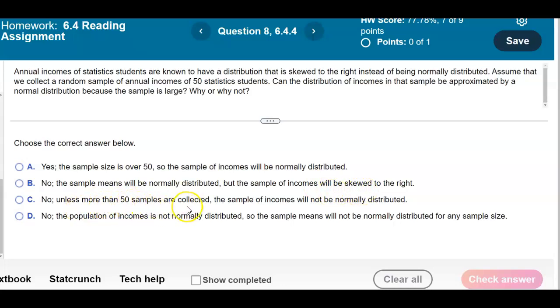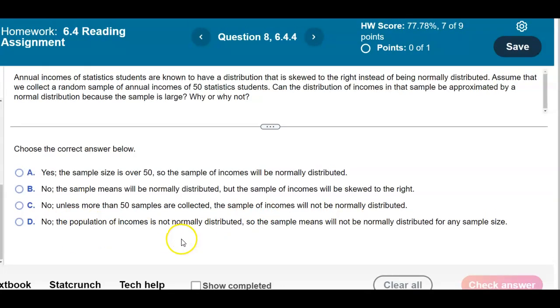No, unless more than 50 samples are collected, the sample of incomes will not be normally distributed. And no, the population of incomes is not normally distributed, so the sample means will not be normally distributed for any sample size.